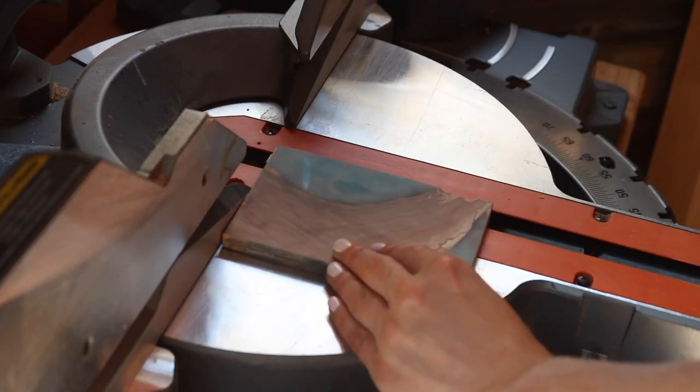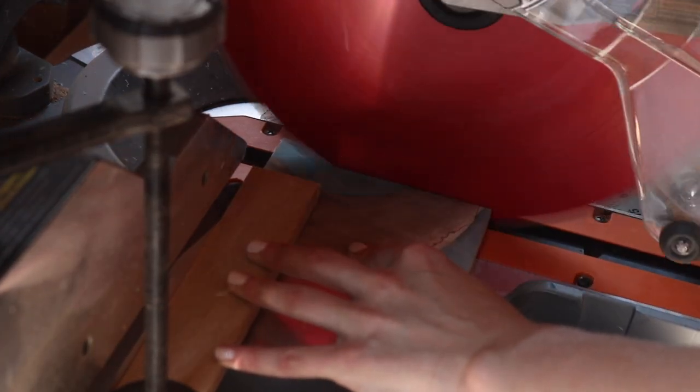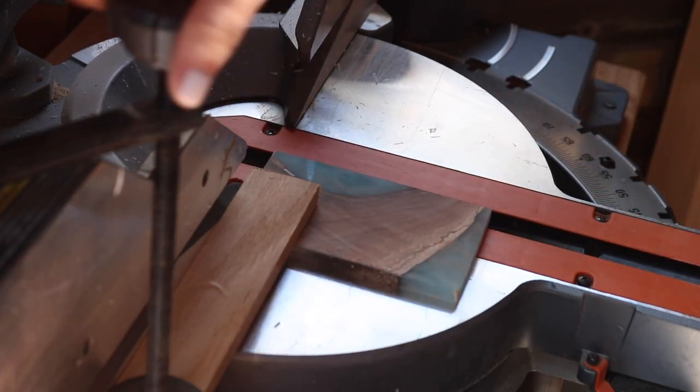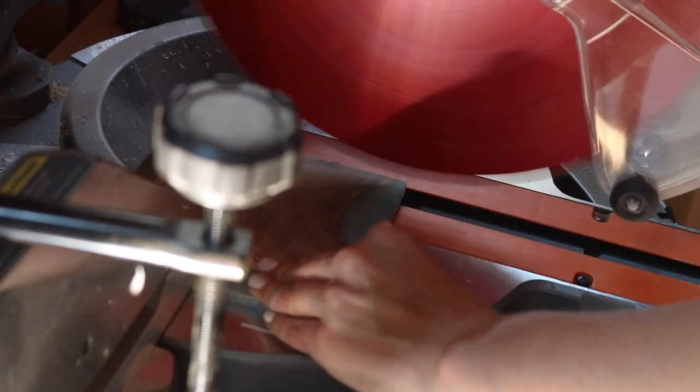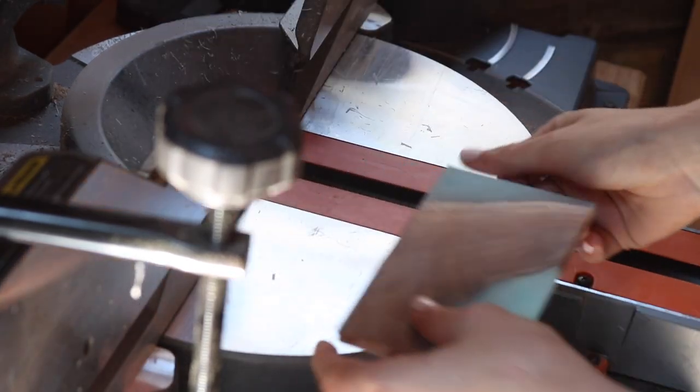I then brought them over to my miter saw and began to cut them down to their final dimensions. Now, if your piece is too small to use at the miter saw comfortably, a little trick that I have is using a scrap piece of wood and then clamping it down to provide enough pressure on the piece that you are cutting so that your fingers don't have to be close to the blade.